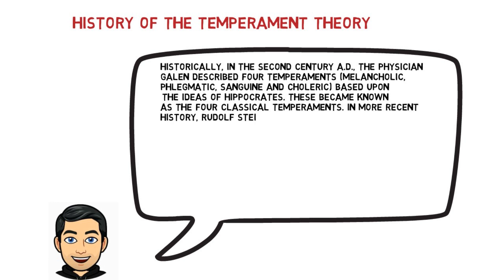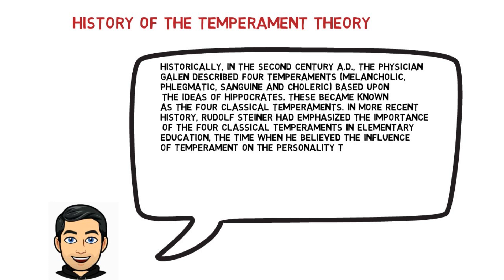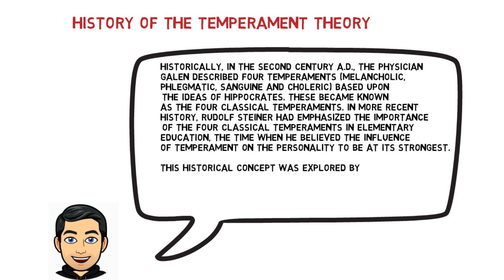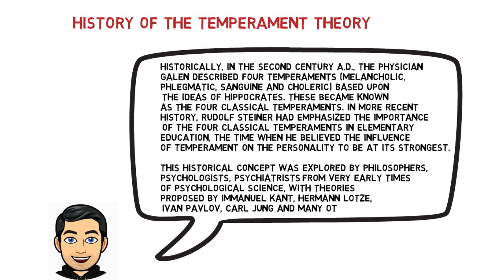In more recent history, Rudolf Steiner emphasized the importance of the four classical temperaments in elementary education, the time when he believed the influence of temperament on personality to be at its strongest. The historical concept was explored by philosophers, psychologists, and psychiatrists from very early times of psychological science, with theories proposed by Immanuel Kant, Hermann Lotse, Ivan Pavlov, Carl Jung, and many others.